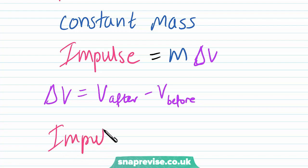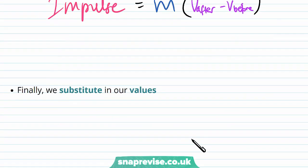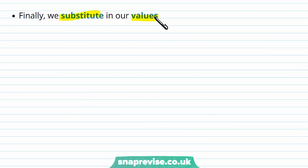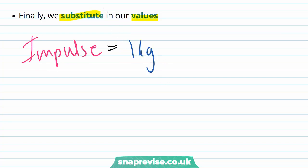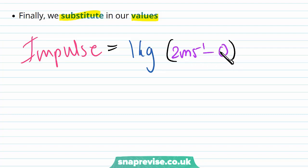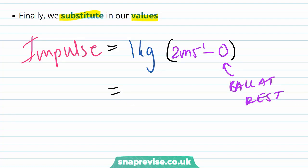So finally, impulse equals the mass of the ball M multiplied by the change in velocity, where the change in velocity is given by velocity after minus velocity before. Substituting in our values: impulse equals 1 kilogram multiplied by the change in velocity. The velocity after the collision is 2 meters per second, and initially the ball is at rest so the velocity before is zero. This gives us an impulse of 1 times 2, so 2 kilograms meters per second.